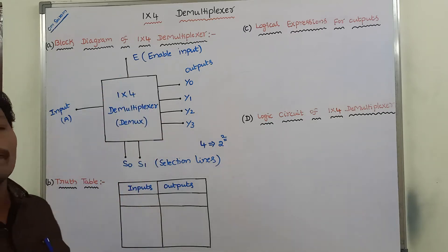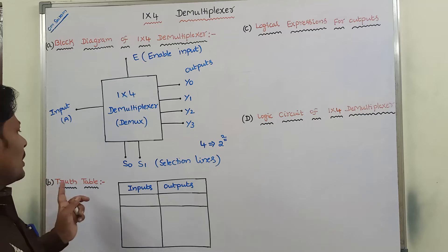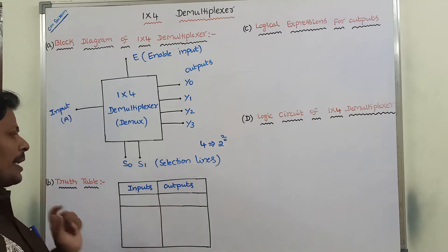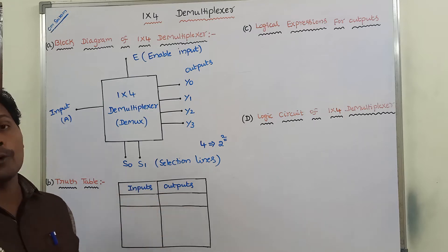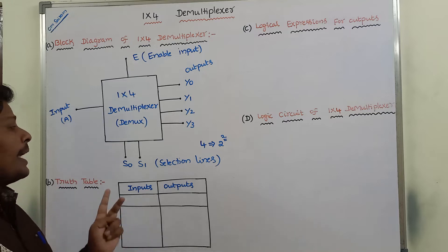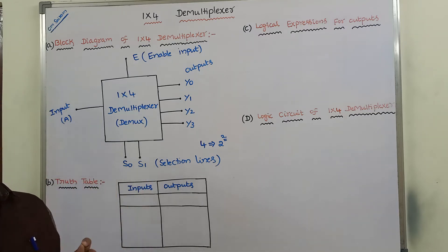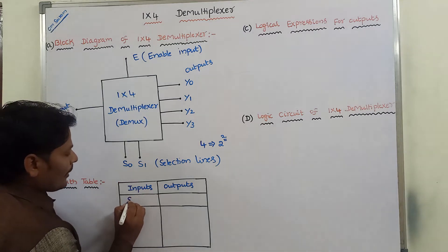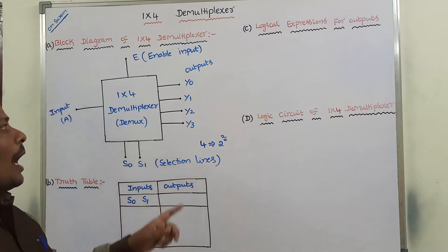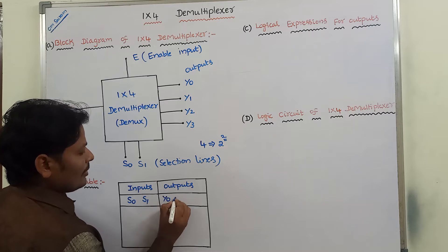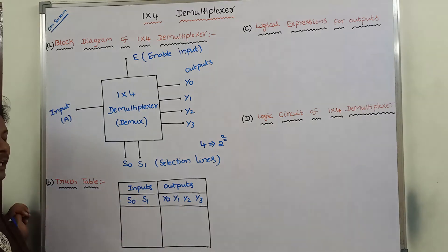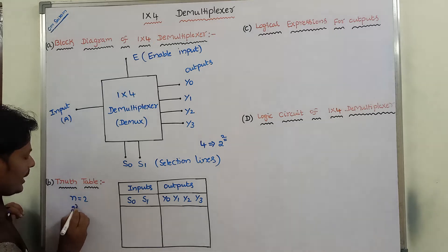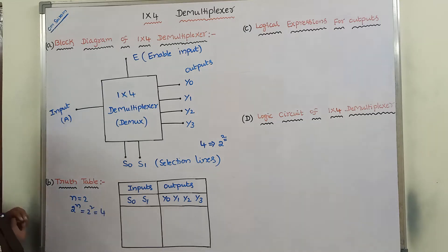This is the working of 1x4 demultiplexer. Now coming to the truth table. The truth table contains two columns: one is the inputs column and the second one is the outputs column. In the input column, we are taking the selection lines S0 and S1 as the inputs. The outputs are Y0, Y1, Y2, Y3. There are 2 inputs, so 2 power N equals 2 power 2, giving us 4 possible input combinations.